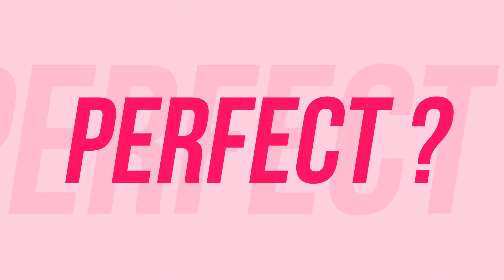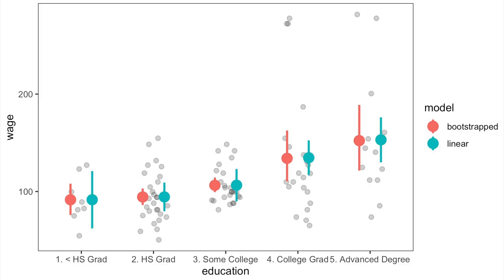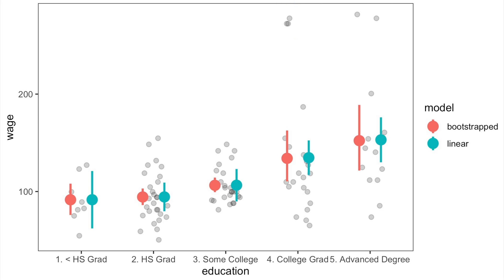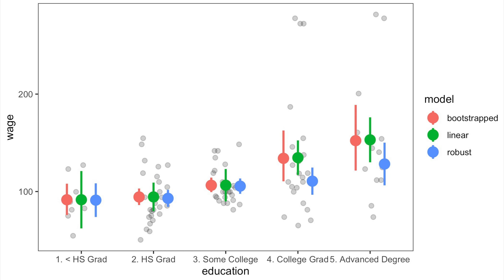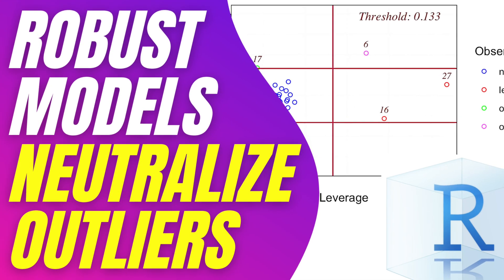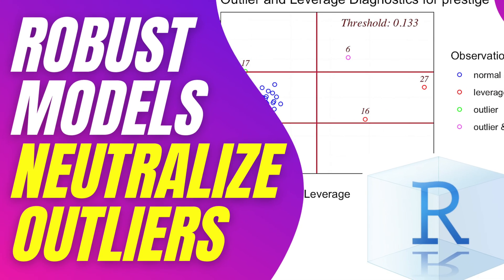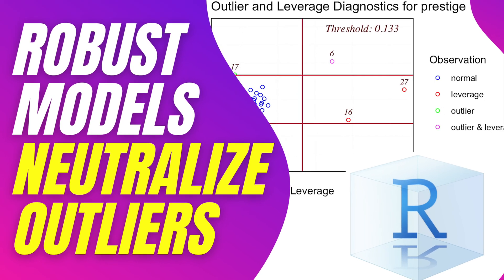So, is the bootstrap method perfect? Of course not. While bootstrap more accurately describes the variance of a sample, if you have real outliers or very influential observations in your data, they will be given more weight than needed. In that case, you would use a robust regression. And if you want to become a more complete data scientist in the next 5 minutes, watch this video.